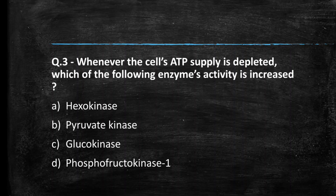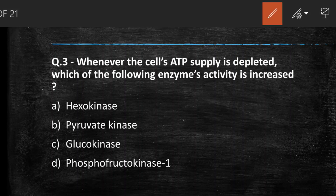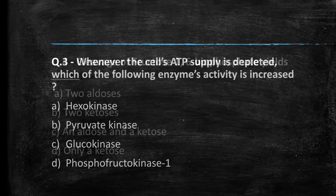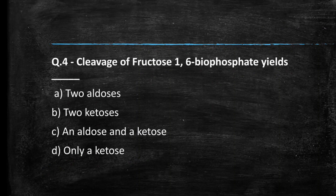Next question: when the cell's ATP supply is depleted, which of the following enzyme activities is increased? (A) Hexokinase, (B) Pyruvate kinase, (C) Glucokinase, (D) Phosphofructokinase-1. The right answer is option D, phosphofructokinase-1. It is a regulatory enzyme and a major point of regulation in glycolysis; its activity is increased whenever the cell's ATP supply is depleted.